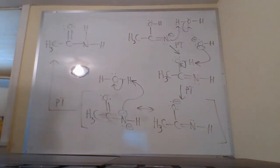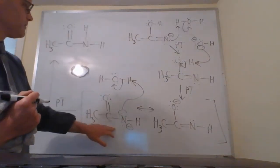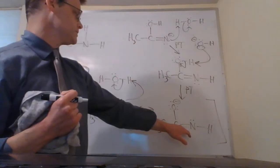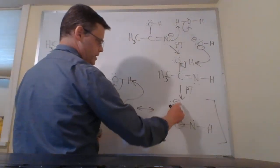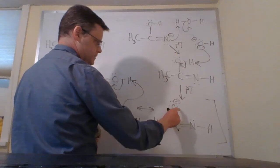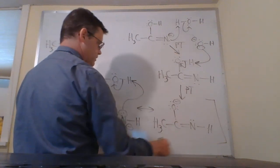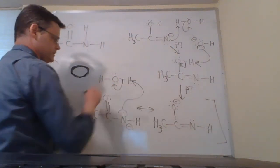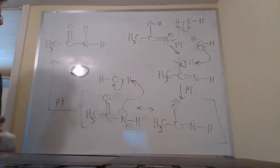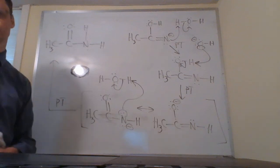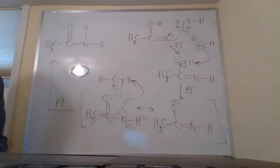This last proton transfer—you could show it from this resonance form or from this resonance form. If you're going to show it from this resonance form, you need to have three arrows: one to bring this lone pair here, then one to pick up this hydrogen, and a third to do that. You can use either resonance form for the final proton transfer; you just need to show the correct arrows when doing that. That concludes our video lecture on the hydrolysis of nitriles. Thanks for watching.